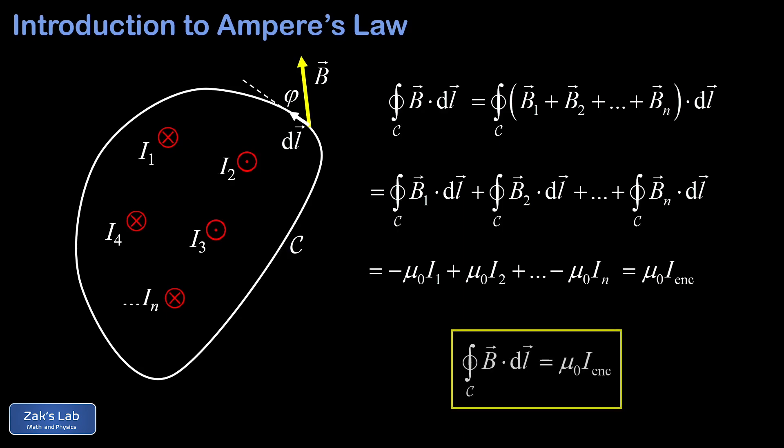And this is Ampere's law: the path integral of B dotted into dL on a closed curve is equal to mu-naught times the net enclosed current passing through the surface defined by the curve. Calling back to the analogy with Gauss's law, the amazing thing is that it allows us access to the magnetic field based only on the net current penetrating the loop — it doesn't matter where the currents are or what the shape of the loop is. Like Gauss's law, Ampere's law is only useful in cases with a high degree of symmetry, where we can define an Amperean loop along which the dot product is trivial and the magnitude of B is constant, making the path integral trivial and allowing us to solve for B.